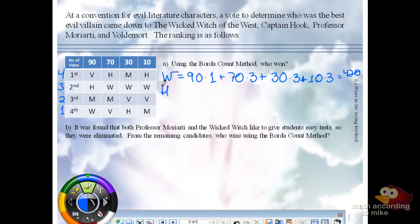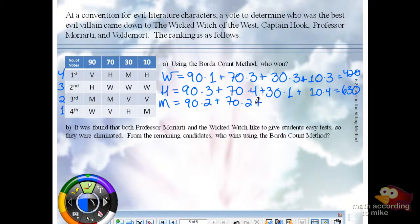Hook: We have 90 times 3 plus 70 times 4 plus 30 times 1 plus 10 times 4. I got 630. And if everyone's okay, I'm just going to keep writing.